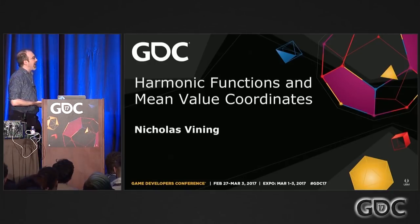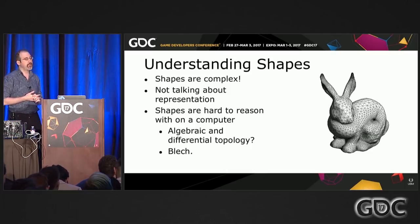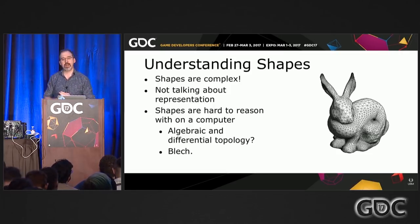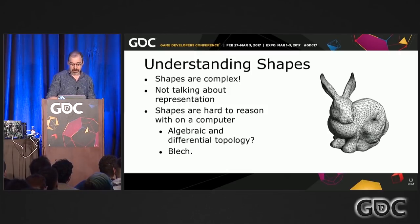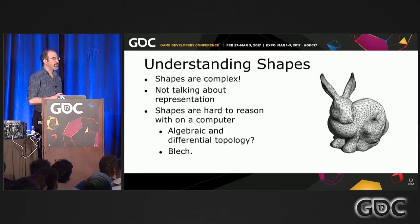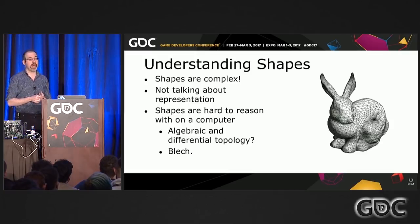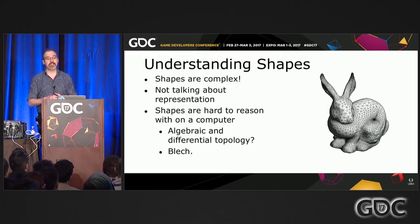So I'm Nicholas. Today I'm going to be talking about functions and mean value coordinates. Really what this is about is the problem of understanding shape. Shapes are surprisingly difficult. Here is an example shape in computer graphics — it's the famous Stanford bunny. If we're working with shapes, say you're doing texture generation, modeling, or procedural content generation, you need to be able to take a shape and meaningfully tell the computer how to understand it.